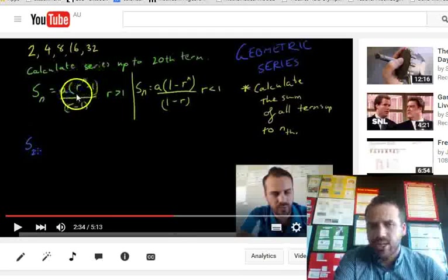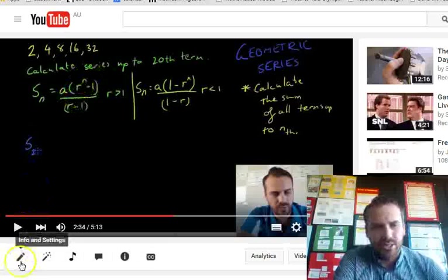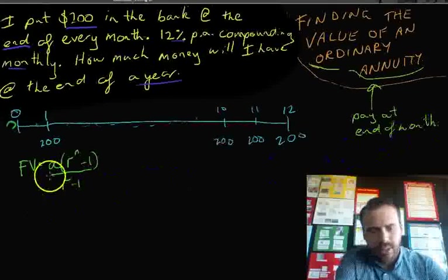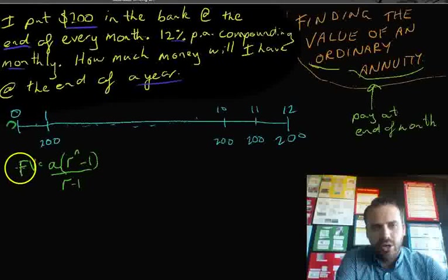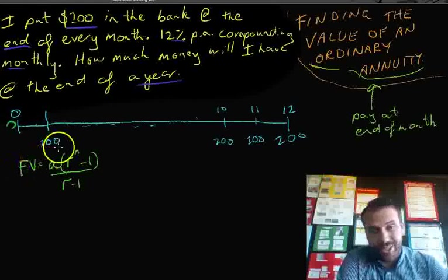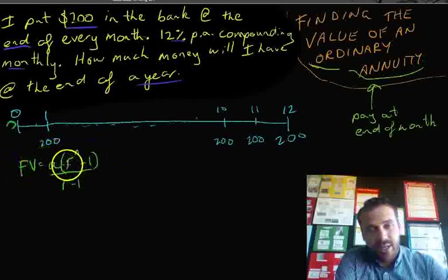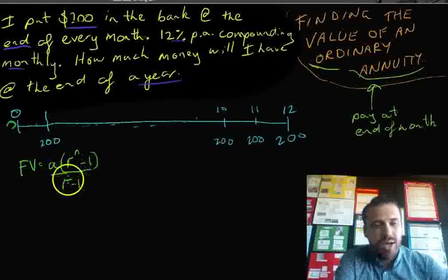So, let's take a look at how that might look for our question here. Okay, so I've got my formula here. The future value of an annuity, or a geometric series, is a bracket r to the n minus 1 over r minus 1.